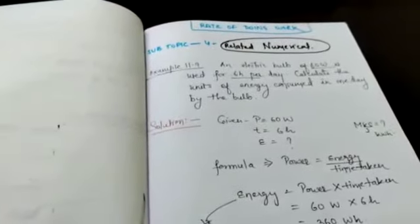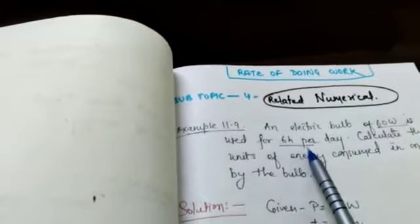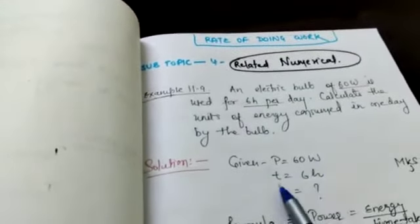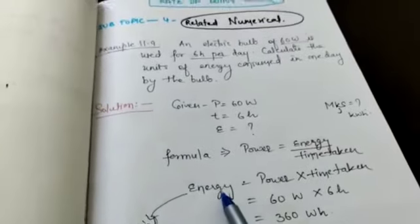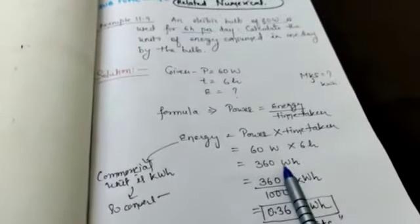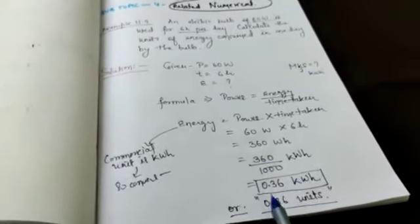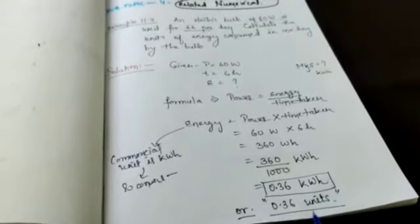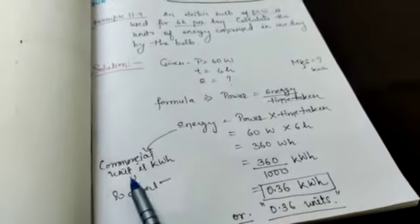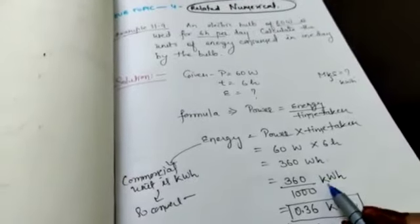Next we have related numerical. An electric bulb 60 watt is used for 6 hours. 60 watt is power. This one is time. Calculate the units of energy consumed in one day. So power is there, time is there, energy. Power is energy upon time. So energy is power into time. Power is this one, time is this. Values put. This one is watt hour. Kilowatt you know is commercial unit. So convert to kilowatt by dividing by thousand. So this is the value, 0.36. Or you can say kilowatt hour or you can write units. Because here answer is asked in units. Energy's commercial unit is kilowatt hour.